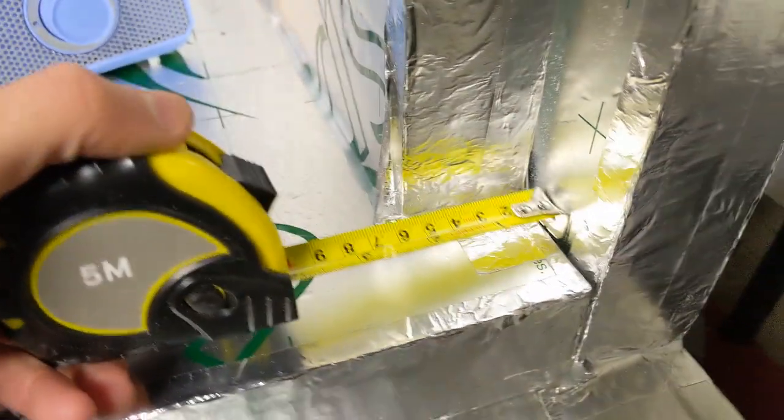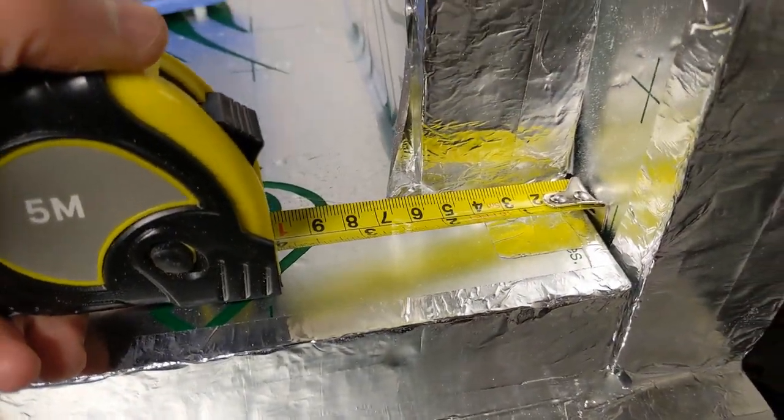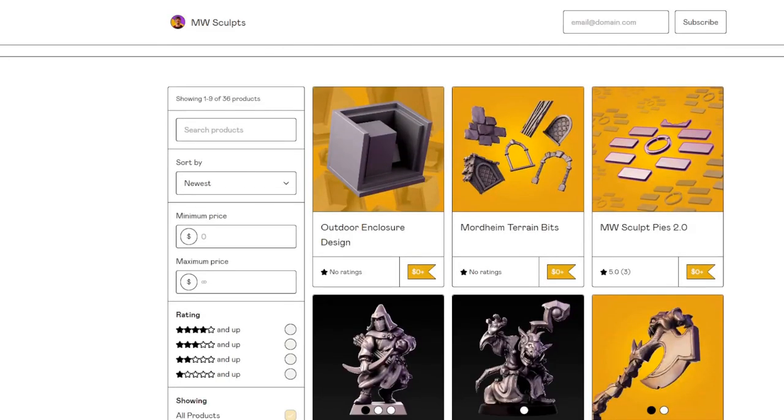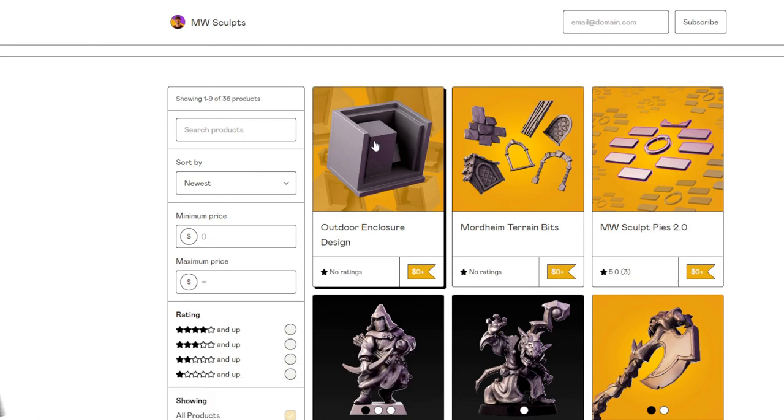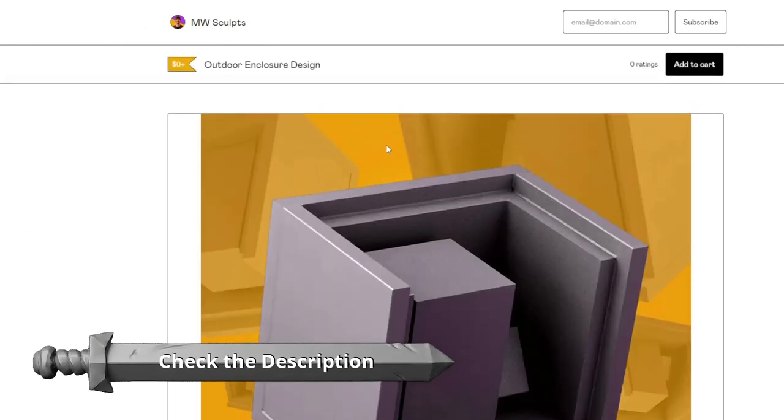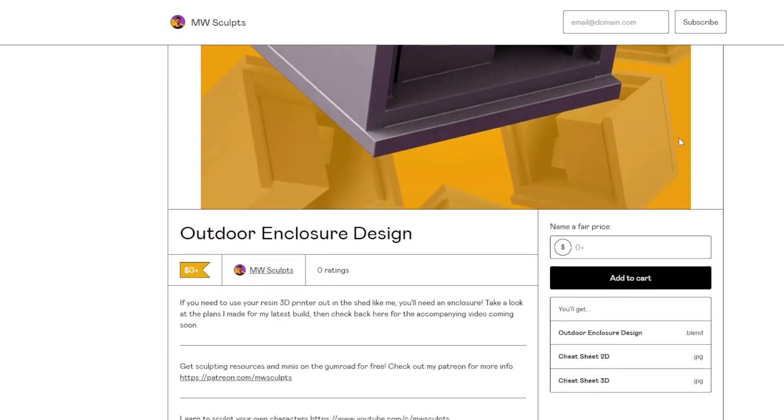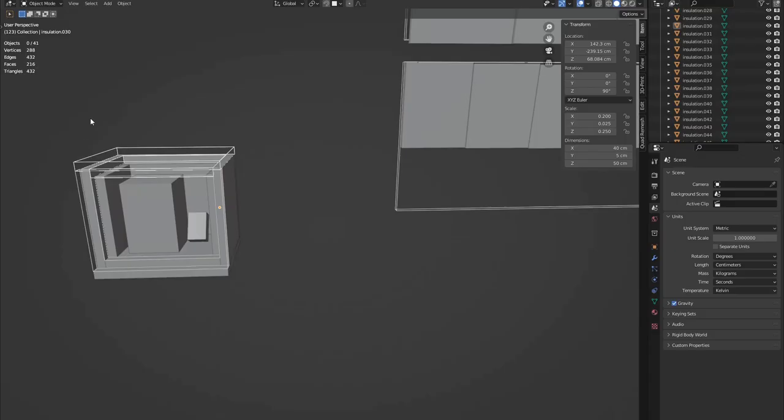Each one overlaps by 50 millimeters so that all sides have two layers of foam and none of the seams will line up, which will improve heat retention. You can download this Blender file from my Gumroad to give the design a closer look. Check out the description for a link to that and links to some of the products used in this build.